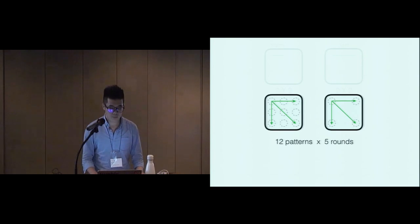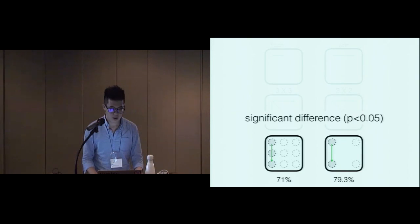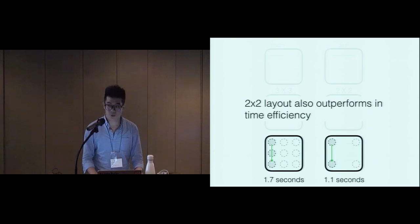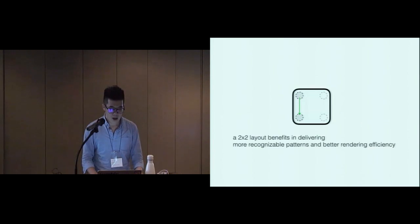In the study, every possible corner-to-corner straight lines were tested. The result showed significant difference between two recognition rates, and the 2x2 layout has better accuracy. In addition, a straight line displayed on a 2x2 layout requires shorter time than the other one. To summarize, a 2x2 layout outperforms in both recognition rates and rendering efficiency.